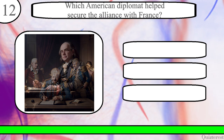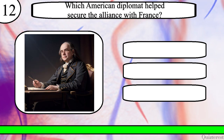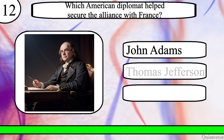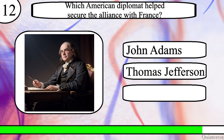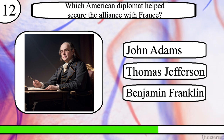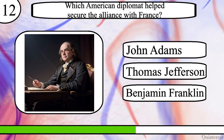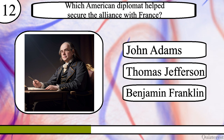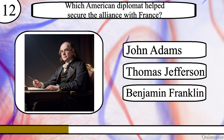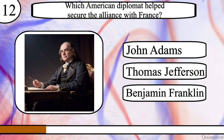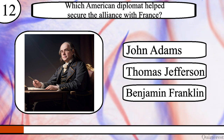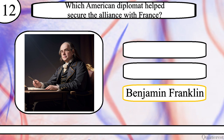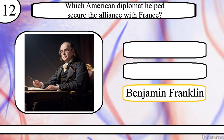Question 12. Which American diplomat helped secure the alliance with France? John Adams, Thomas Jefferson, or Benjamin Franklin? The correct answer is Benjamin Franklin.